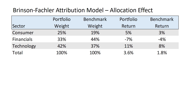So really what we want to do is break down why did a portfolio perform a certain way. Why did we outperform or underperform during a certain month? Was it because of sector allocation? Was it because of stock selection? Was it because of something else called the interaction effect?